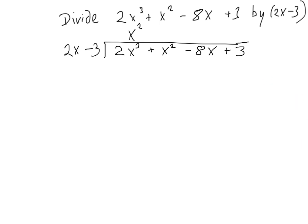Let's continue with our calculations. Remember, the first thing we did was divide 2x into 2x³ to get x². Next we multiply the x² by 2x - 3.